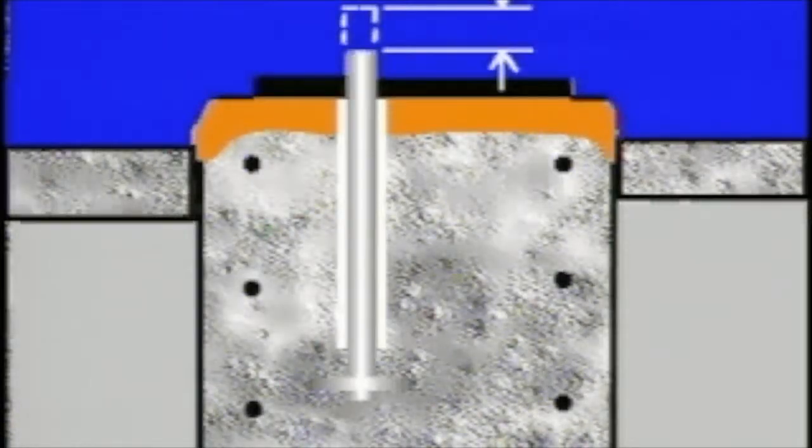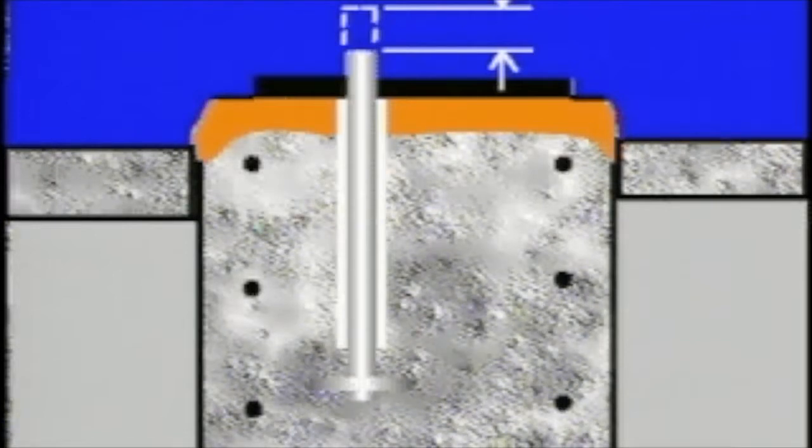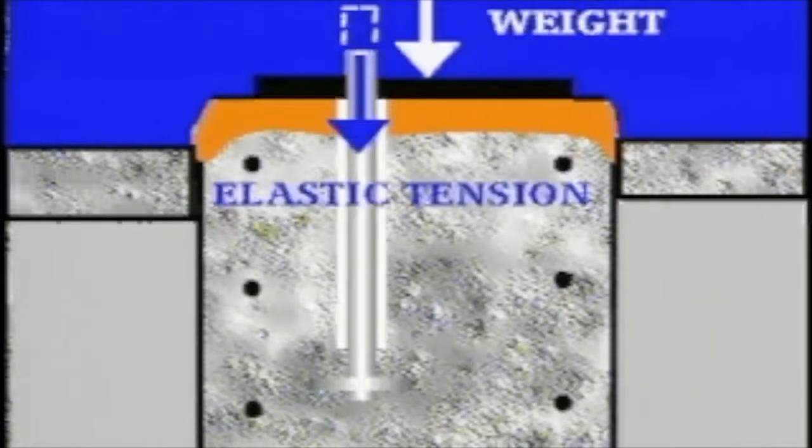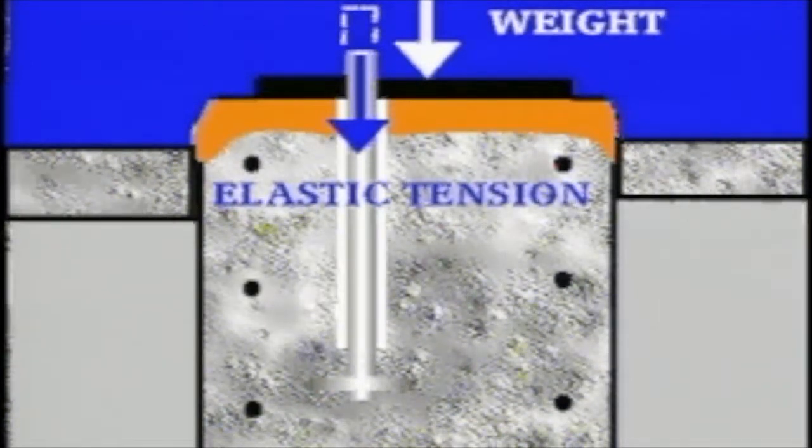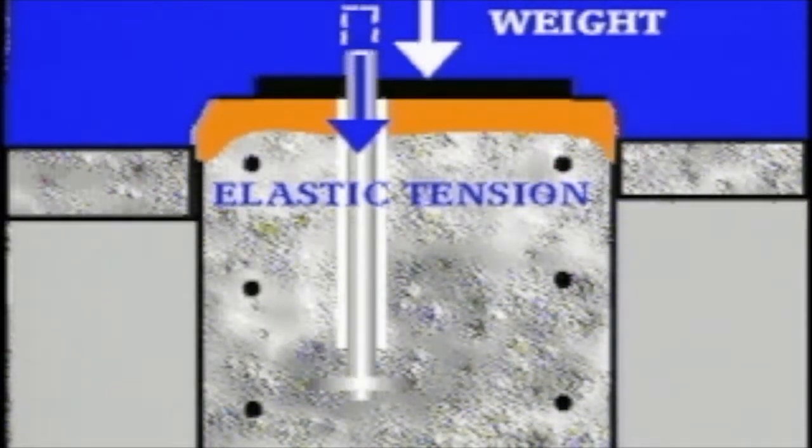To properly tension an anchor bolt, there must be enough unbound length to allow the bolt to stretch within its elastic limits. This elastic tension holds the machinery down and adds to its dead weight, which puts compressive forces on the concrete foundation.